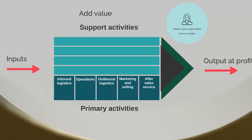Then there are support activities. These are things not directly involved in the product or service being sold, but they are still important — they allow the company to have decent primary activities, hence the name support activities. They include the infrastructure of the organization: the company structure that allows it to have the best operations and best marketing, as well as things like bookkeeping, accounting systems, and budgets — all the things that allow the organization to run effectively.